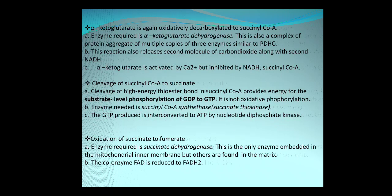When alpha-ketoglutarate is formed, it again undergoes oxidative decarboxylation to give rise to succinyl-CoA. The enzyme required is alpha-ketoglutarate dehydrogenase, which is also a complex protein aggregate of multiple copies of three enzymes, similar to the pyruvate dehydrogenase complex. This reaction also releases another molecule of carbon dioxide along with formation of NADH. This enzyme is again activated by calcium ions but inhibited by NADH and succinyl-CoA.